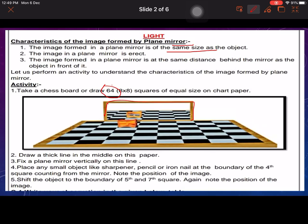Place any small object like sharpener, pencil or iron nail at the boundary of the 4th square counting from the mirror. Note the position of the image. We have kept a sharpener at the 4th square from the mirror, so we have to see what happens to the image.